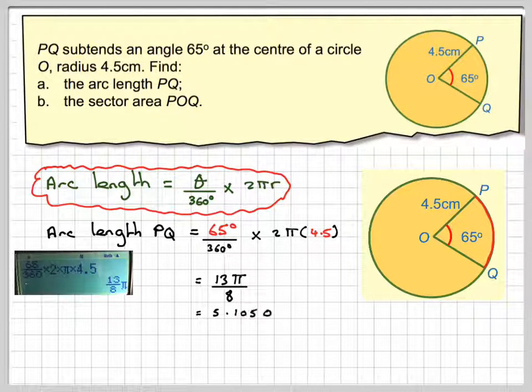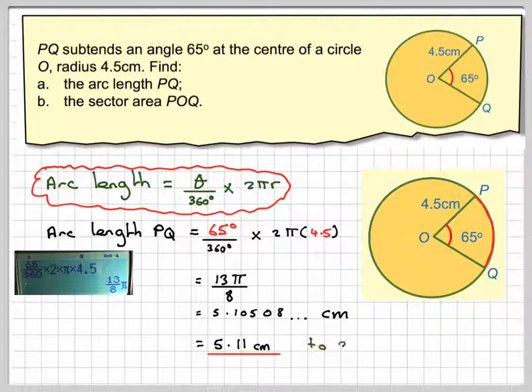That gives an answer of 5.10508 centimetres. To 3 significant figures, that 5 will make that 0 a 1, so it's 5.11 centimetres to 3 significant figures.